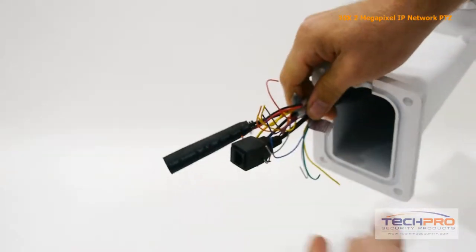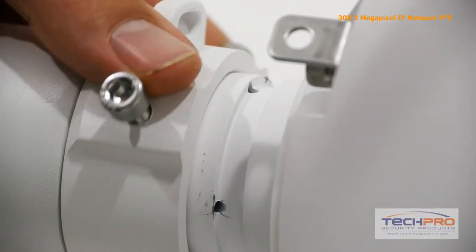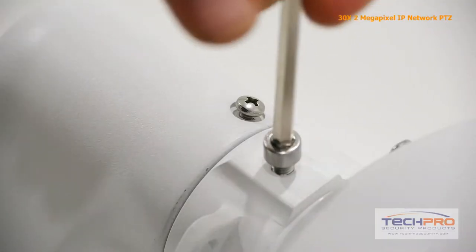You're now ready to attach the wall mount to the dome of the camera. Attach the connection plate to the dome and then tighten the screws with an allen wrench.